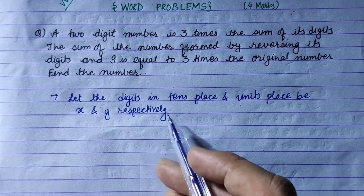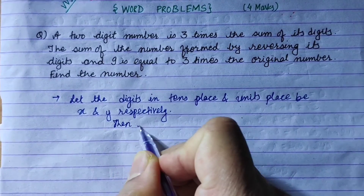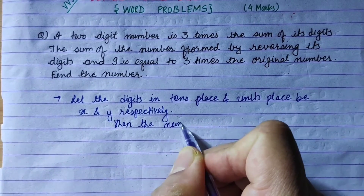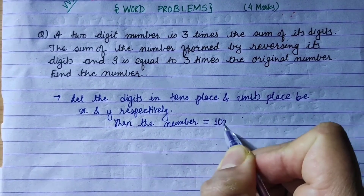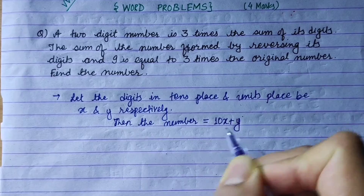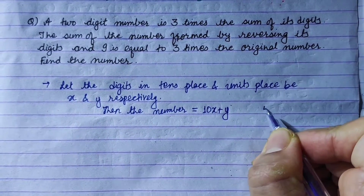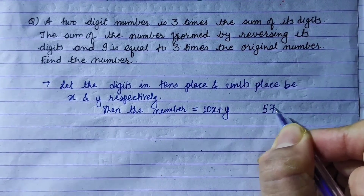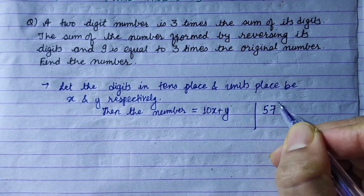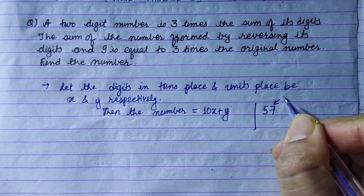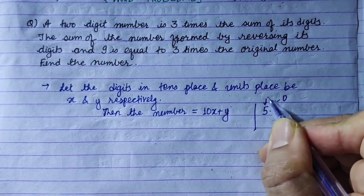The original two-digit number is equal to 10x plus y. For example, suppose the number is 57 — this is a two-digit number where 5 is in the ten's place and 7 is in the unit's place.